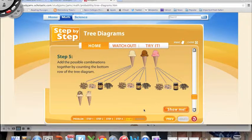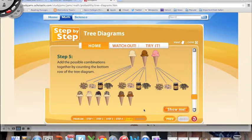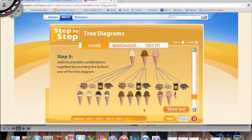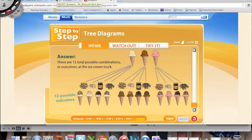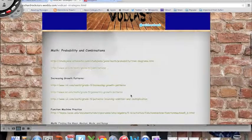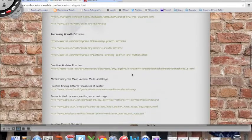Finally add the possible combinations together by counting the bottom row of the tree diagram: one, two, three, four, five, six, seven, eight, nine, ten, eleven, twelve. So it checked out with the Foundational Counting Principle. Zoe now knows that she has 12 total possible combinations or outcomes at the ice cream truck. If it were me I'd be all over the chocolate with chocolate fudge.